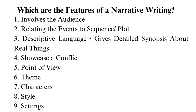Feature 7: Characters. Characters are the people involved in the narrative. As you write the story, you can create characters in a process called characterization. The central character is usually the hero or protagonist, while the character who opposes the hero is the antagonist. Feature 8: Style — how the author uses language like diction, tone, and voice, which helps create the effect and meaning of the essay. Feature 9: Settings — the time and place where the narrated events took place.